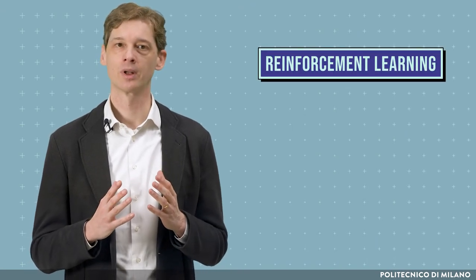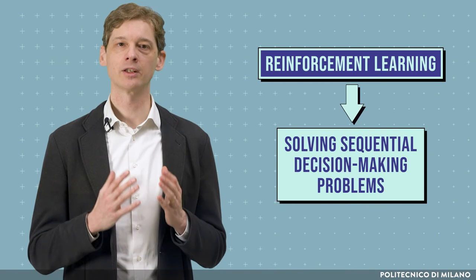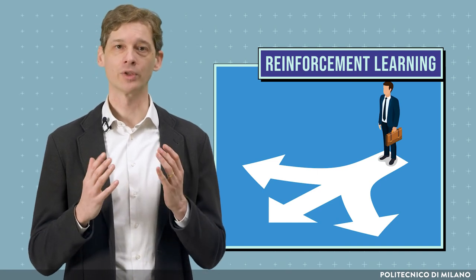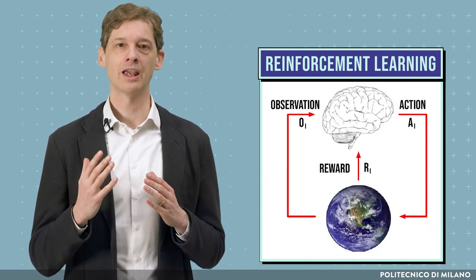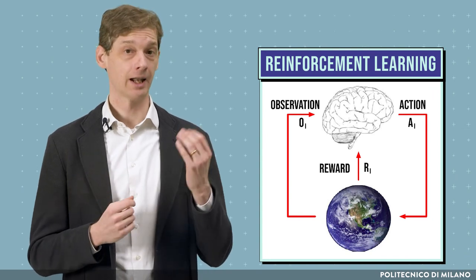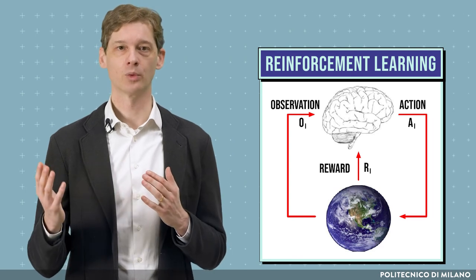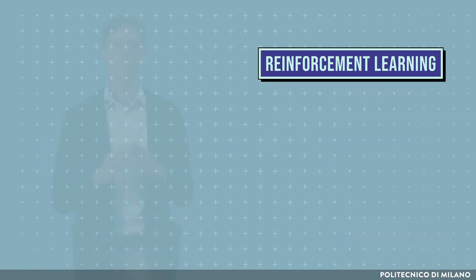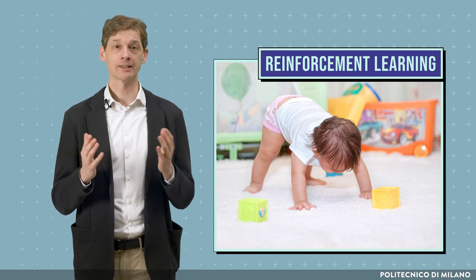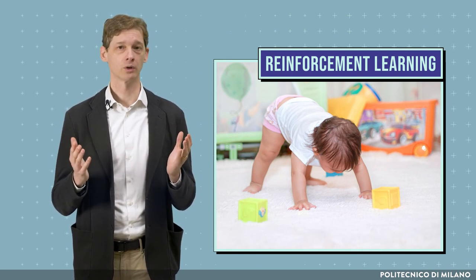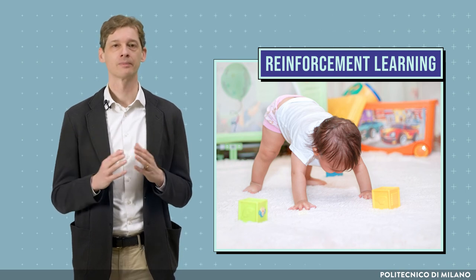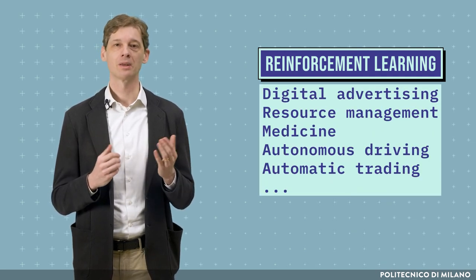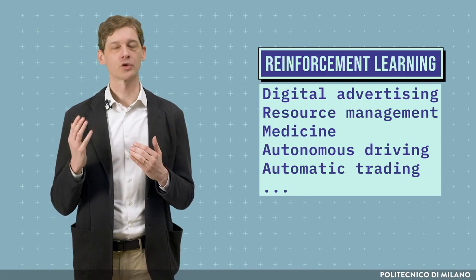The third category of machine learning techniques is reinforcement learning. Reinforcement learning aims at solving sequential decision-making problems. In this case, the agent — that is, the decision-maker — learns by interacting with the environment. At each iteration, the agent perceives information from the environment, selects a decision based on that information, and receives a reward, which is a numerical value that the agent aims at maximizing over time. A reinforcement learning agent learns by trial and error, just as animals and humans do when they learn to walk, talk, drive, cook, etc. Reinforcement learning finds application in many real-world problems, such as digital advertising, resource management, medicine, autonomous driving, automatic trading, and many others.